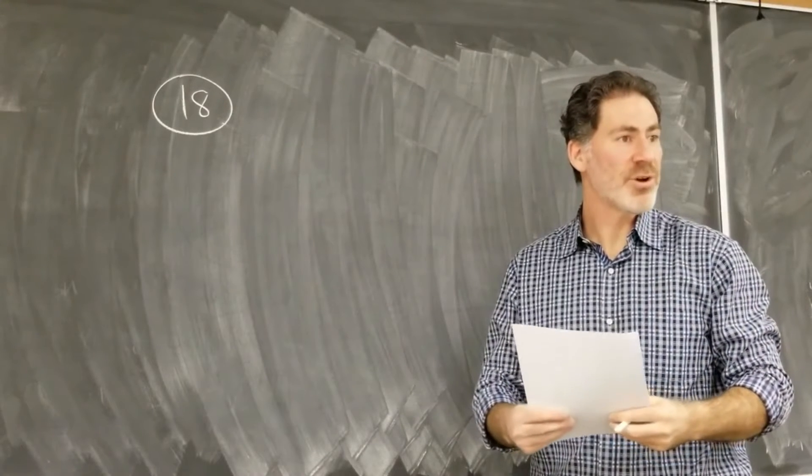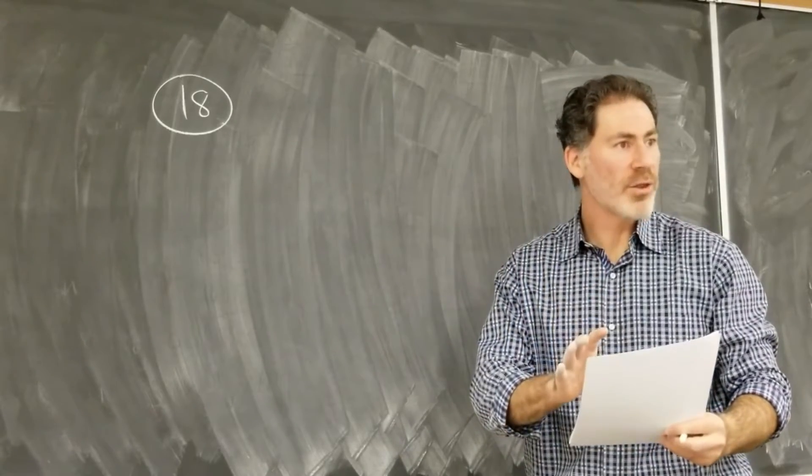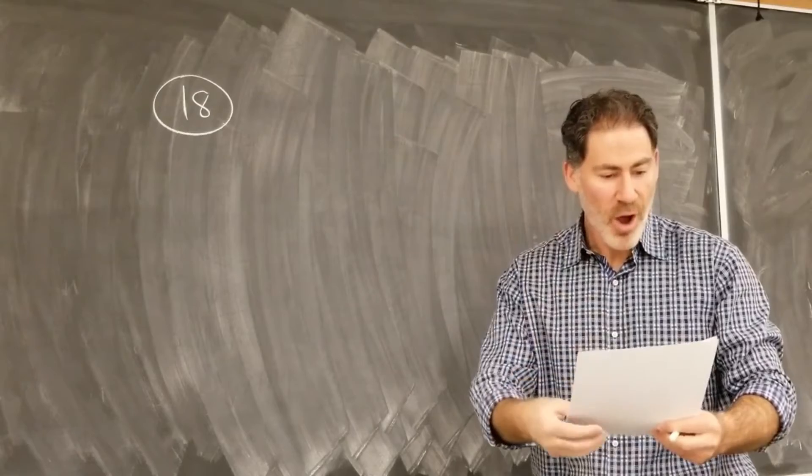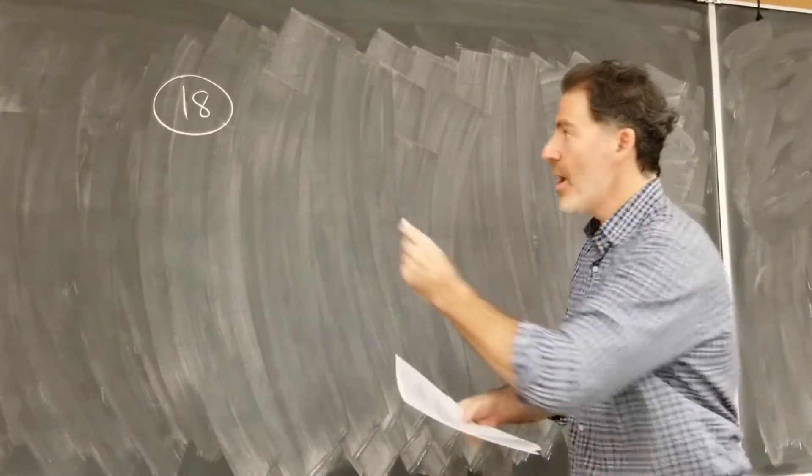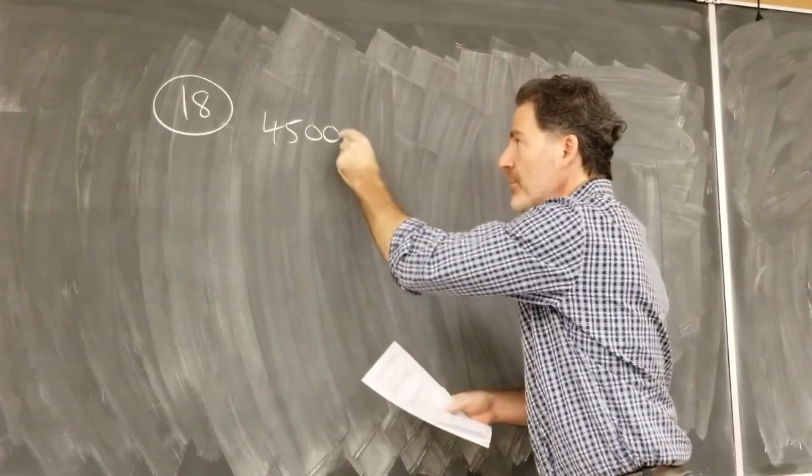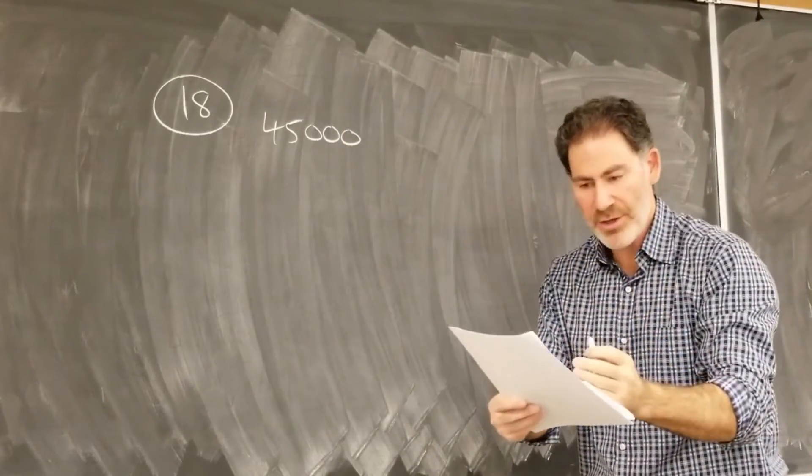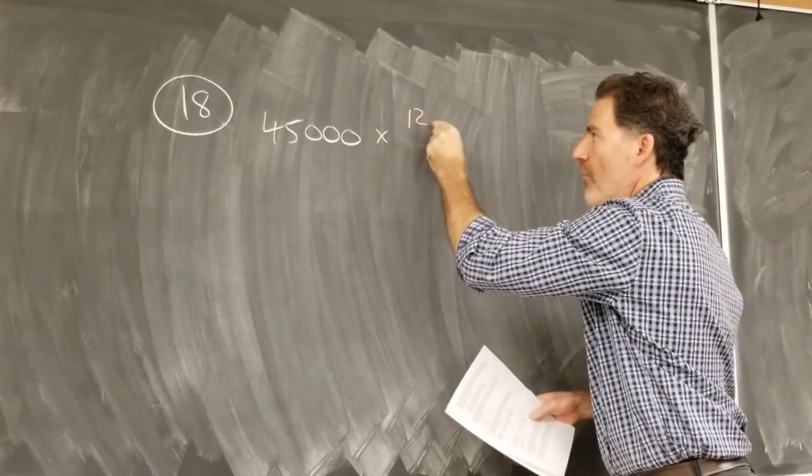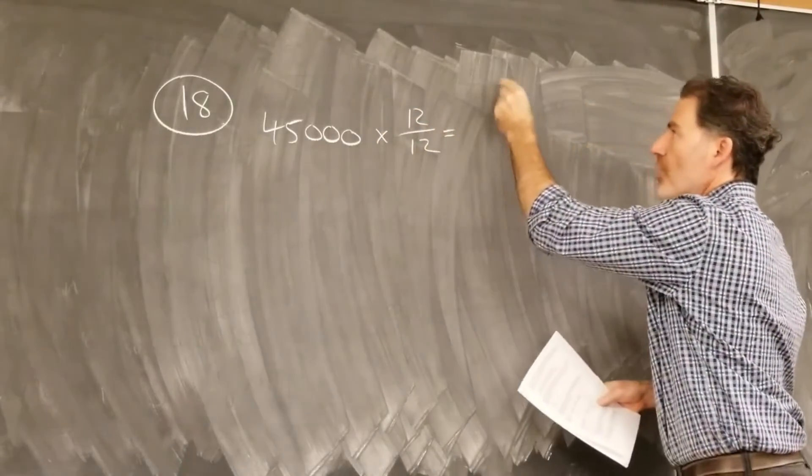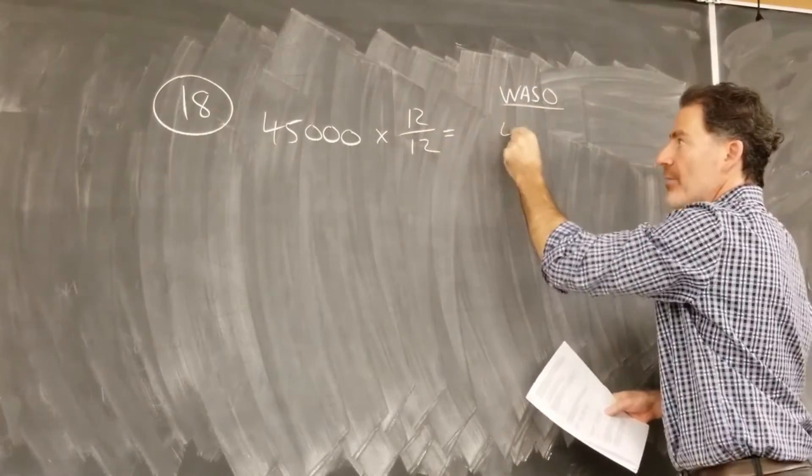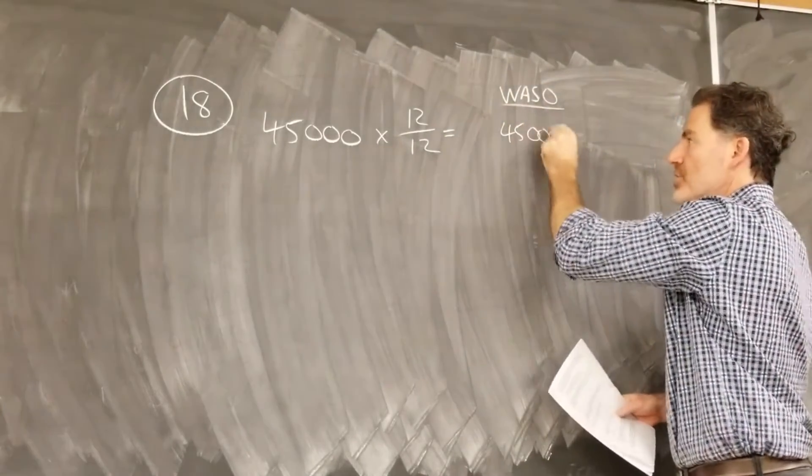Okay, so this was a tricky question. I just want to walk through the way to handle it, a simple way that works all the time. The company has 45,000 shares outstanding on January 1st. This gets a weighting of 12 months out of 12 months. So for my weighted average number of shares outstanding, I'm going to count that as 45,000 shares.